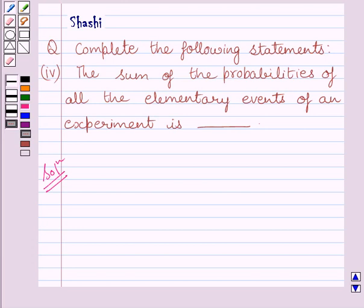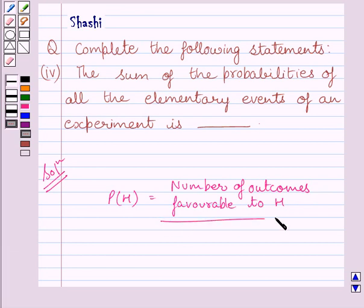If we are required to find probability of getting a head when a coin is tossed once, then we know probability of getting heads is equal to number of outcomes favorable to heads upon total number of all possible outcomes.